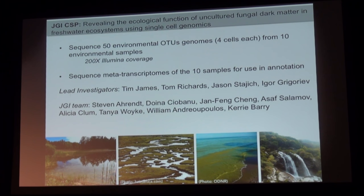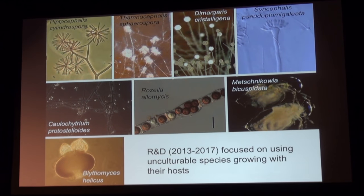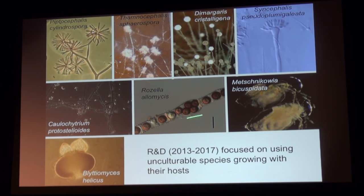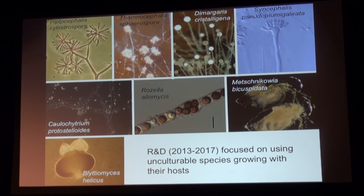Going back a couple of years before we put the CSP together, we were doing what JGI calls R&D — helping them develop single cell genomics as a capacity at JGI. We took eight species where we could get a lot of material: unculturable fungi, mostly mycoparasites like Rosella — a chytrid that parasitizes Sordaria, a Daphnia parasite, and a saprophytic pollen chytrid. All are unculturable in the lab, but we can get a lot of spores from these parasites to use as test organisms to develop this pipeline. I'll go through three lessons we learned during this R&D phase.